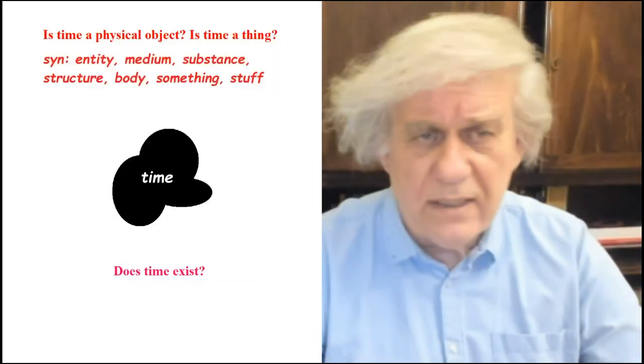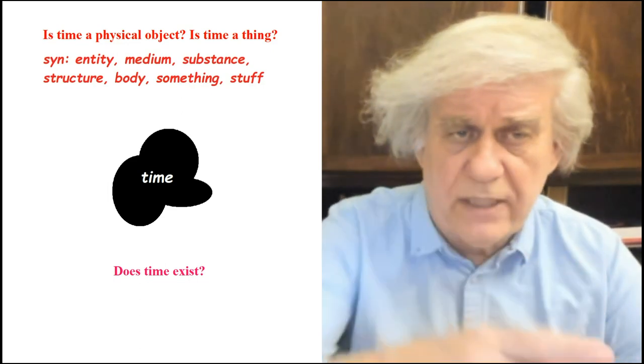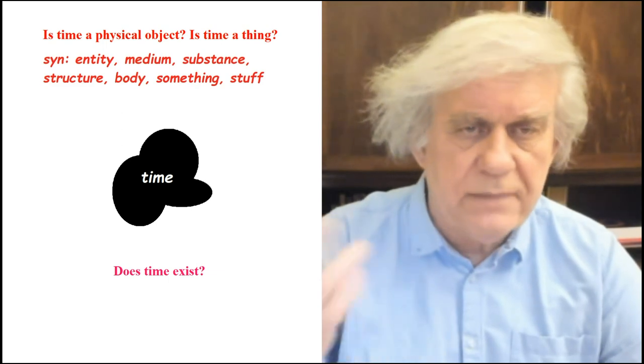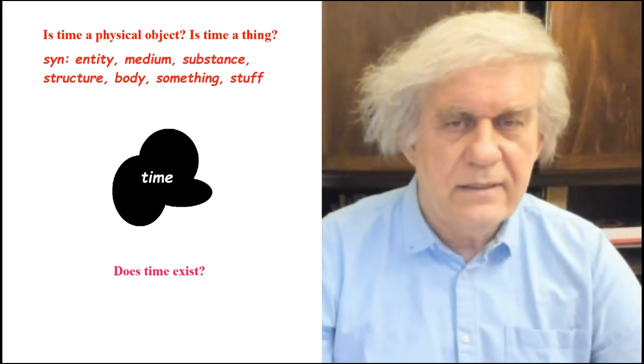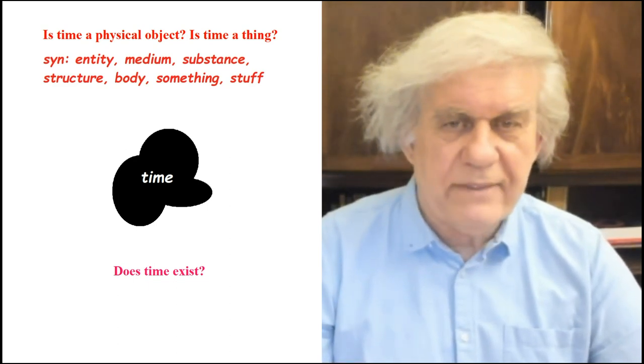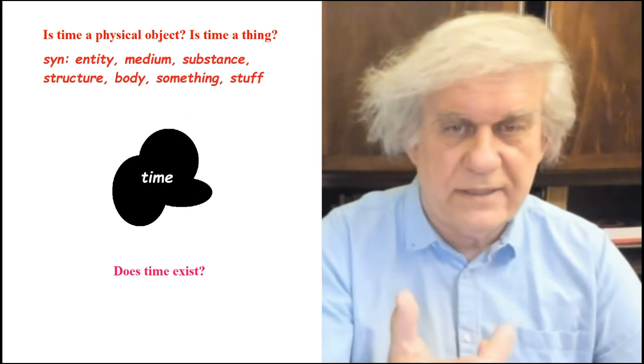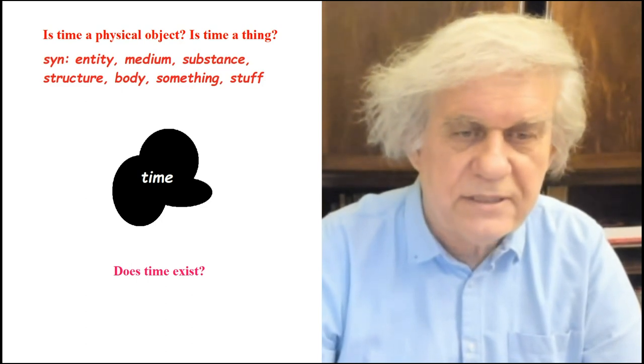The only really important questions are: Is time an object — a physical thing? Those are synonyms, so you can't use 'entity,' 'medium,' 'substance,' or 'structure' in the definition — they're all synonyms for 'thing.' And: Does time exist? Most people would say time is not a thing but time exists — I think 90% of people would answer that way. To answer these questions, we first need to define what an object is and what existence means.